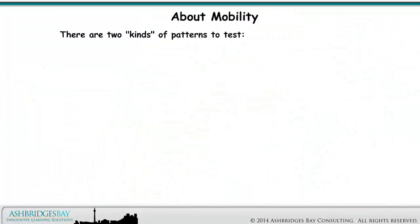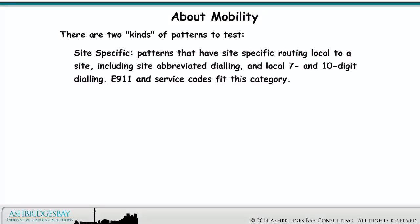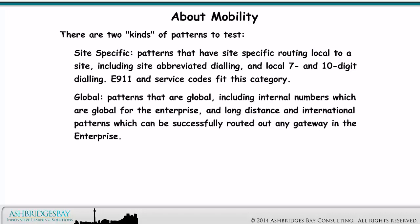There are two kinds of patterns to test. Site-specific: patterns that have site-specific routing local to a site, including site-abbreviated dialing, and local 7 and 10-digit dialing — E911 and service codes fit this category. And global: patterns that are global, including internal numbers which are global for the enterprise, and long-distance and international patterns that can be successfully routed out any gateway in the enterprise. These two kinds of patterns have different behavior.